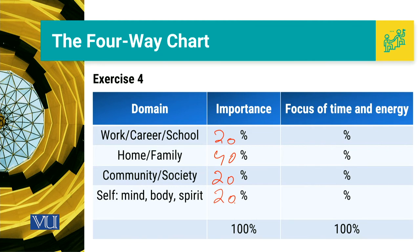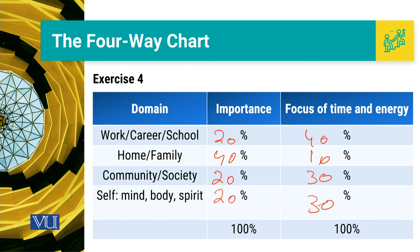Now we have to see that if we focus on time and energy we spend related to these four domains based upon their importance — there is a chance that importance of work for me is 20%, lekin jab mein time and energy ki baat karta hun, I give 40% of my time and energy to work. I give 10% of my time and energy to family and home. I may give 30% to community and the rest 30% to myself. Ab yahan par hume ek mismatch nazar a raha hai — our importance percentage is not in accordance with our focus of time and energy.